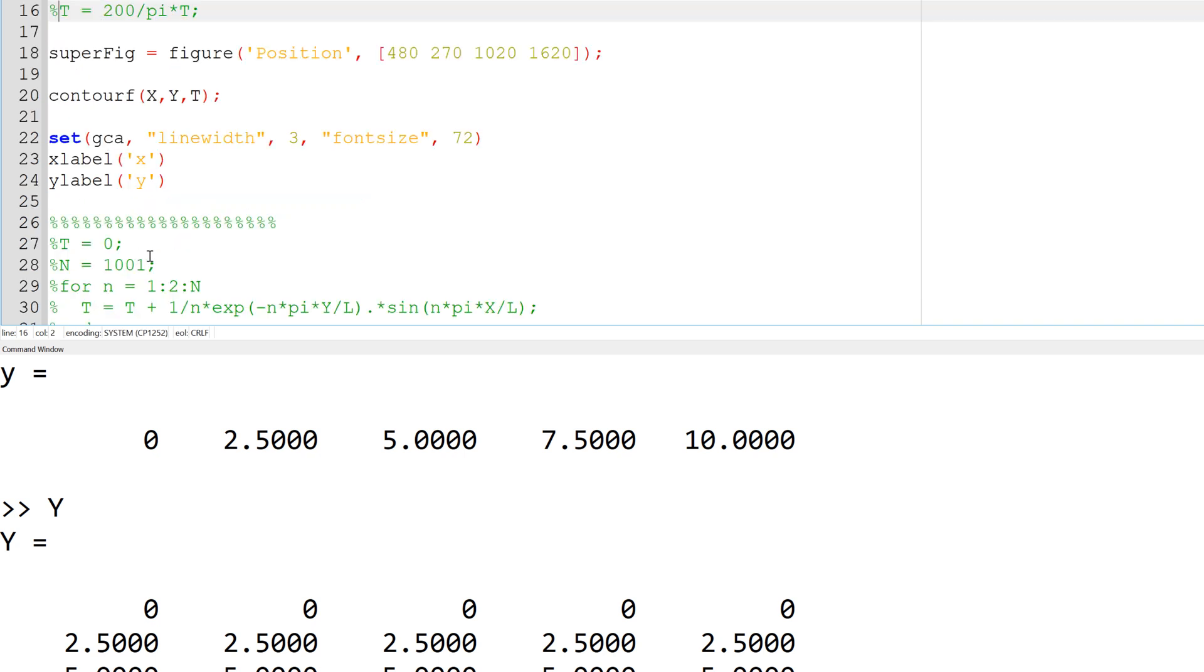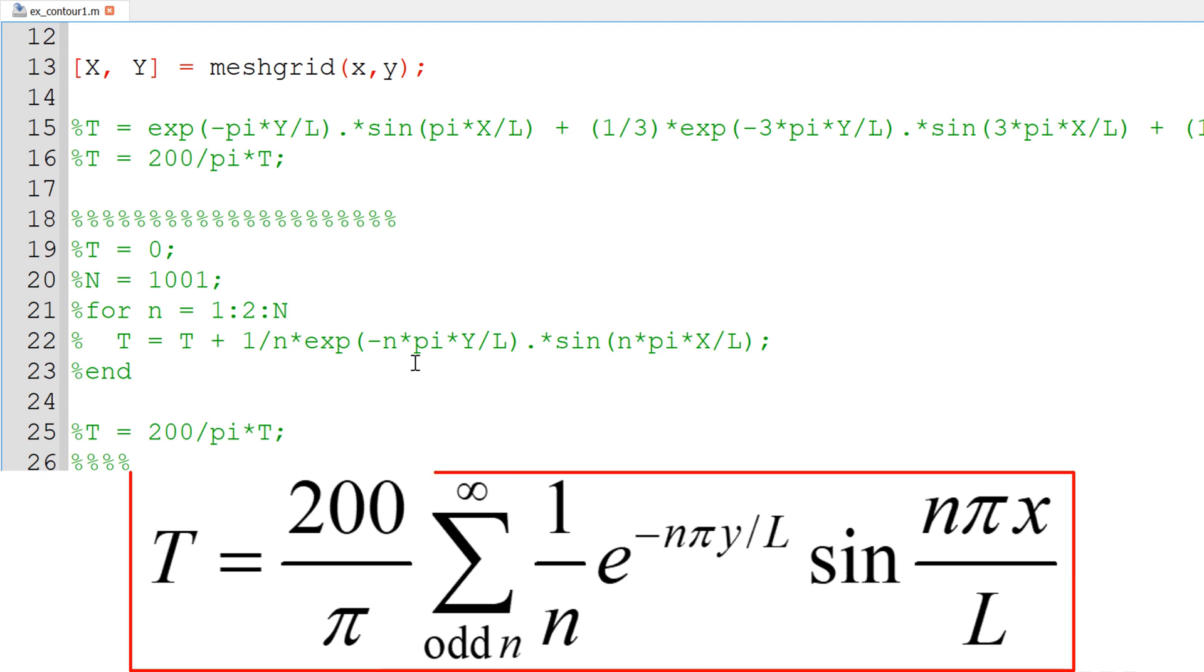So instead, what you can do, you can use a for loop. The way that it works is you can use a cumulative sum. So cumulative sum, you can start with t equal to 0. Then as you add more term, you can keep on adding.